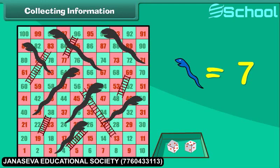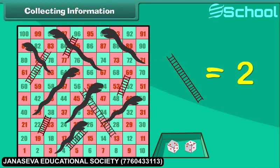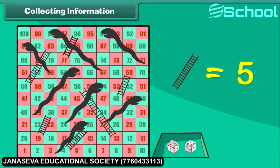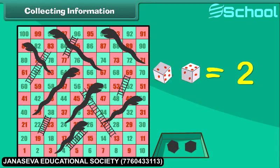Now we count the total number of ladders: 1, 2, 3, 4, 5 and 6. There are 6 ladders. How many dice do you see here? There are 2 dice.